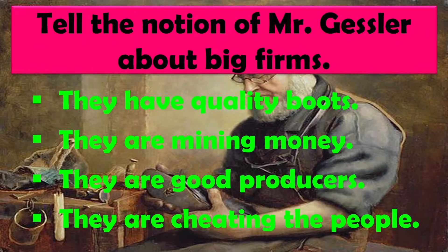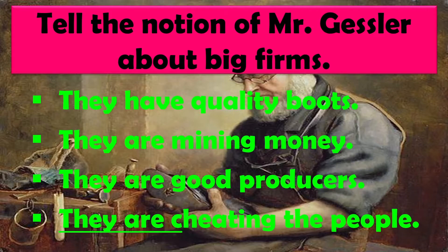Tell the notion of Mr. Gessler about big firms. Mr. Gessler ke badi companies ke bare mein kya vichar the? Options: They have quality boots — badi companies gunvattaparak joote bana rahi thi. They are mining money — vo paise bana rahi thi. They are good producers. They are cheating the people — vo logon ke saath dhoka kar rahe the. The right answer is they are cheating the people.